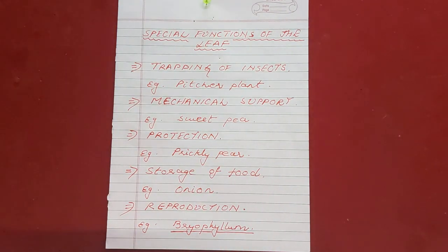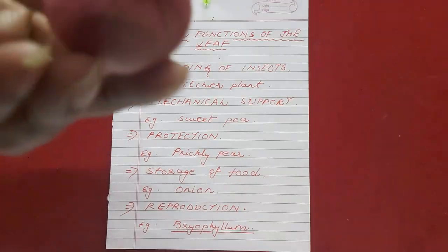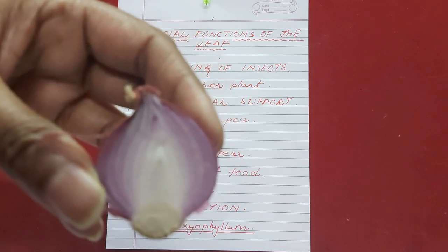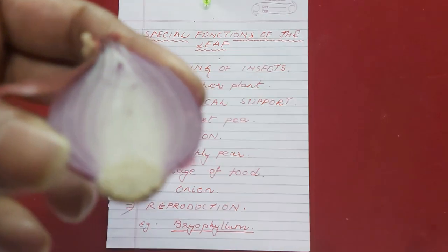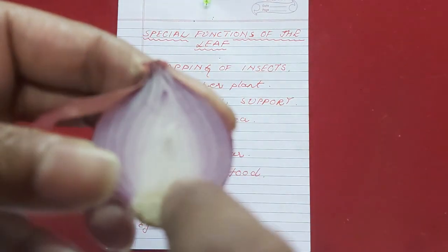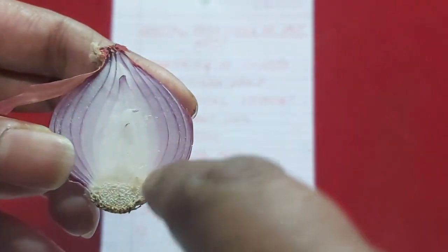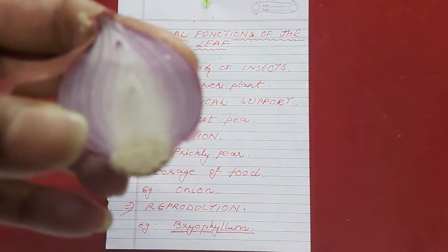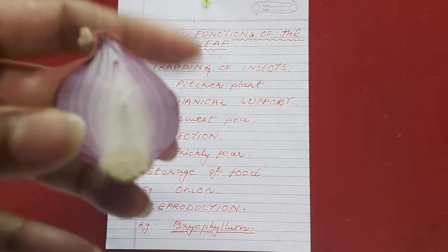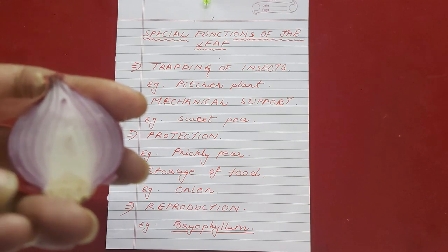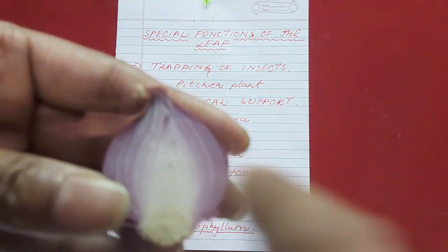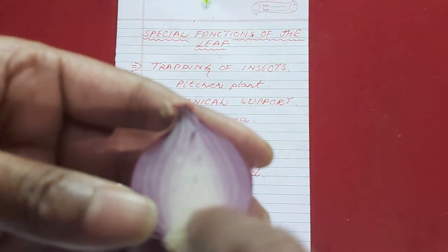The third special function is storage of food. Plants like onion have membranous structures called scale leaves, which become thick and fleshy by storing up food and water. Scale leaves are commonly found in underground stems. So the scale leaves in onion are basically storing food for the plant — and we actually eat them too.